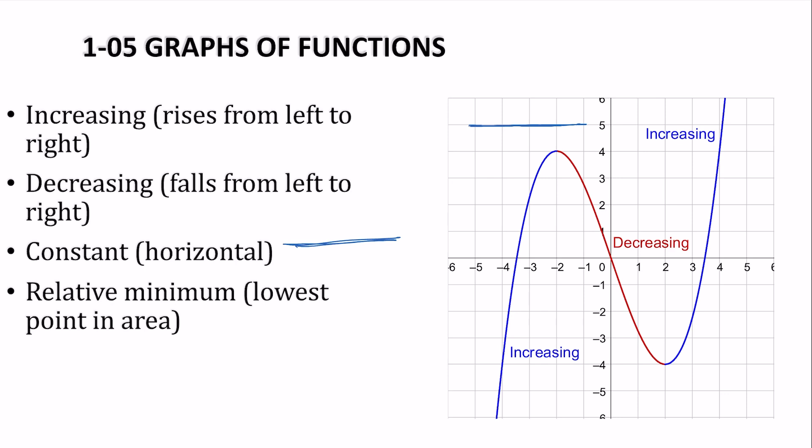Relative minimums are the lowest point in the area, so that is a minimum because it's the lowest in the area. And a relative maximum, which would be right there, would be the highest point in the area.